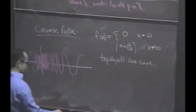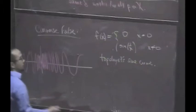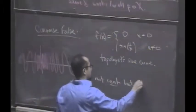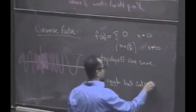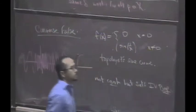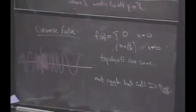Claim is this function is not continuous at 0, but it satisfies an intermediate value property.